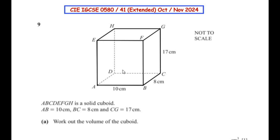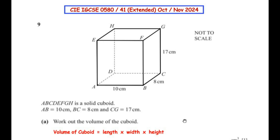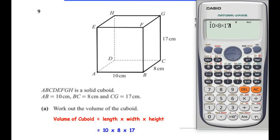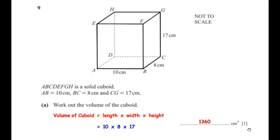Work out the volume of the cuboid. In this figure a cuboid is given and in the first question we need to find out the volume. We have the formula for volume of the cuboid as length times width times height. Length is 10 centimeters, width is 8 centimeters, and height is 17 centimeters. This gives us the value 1360.